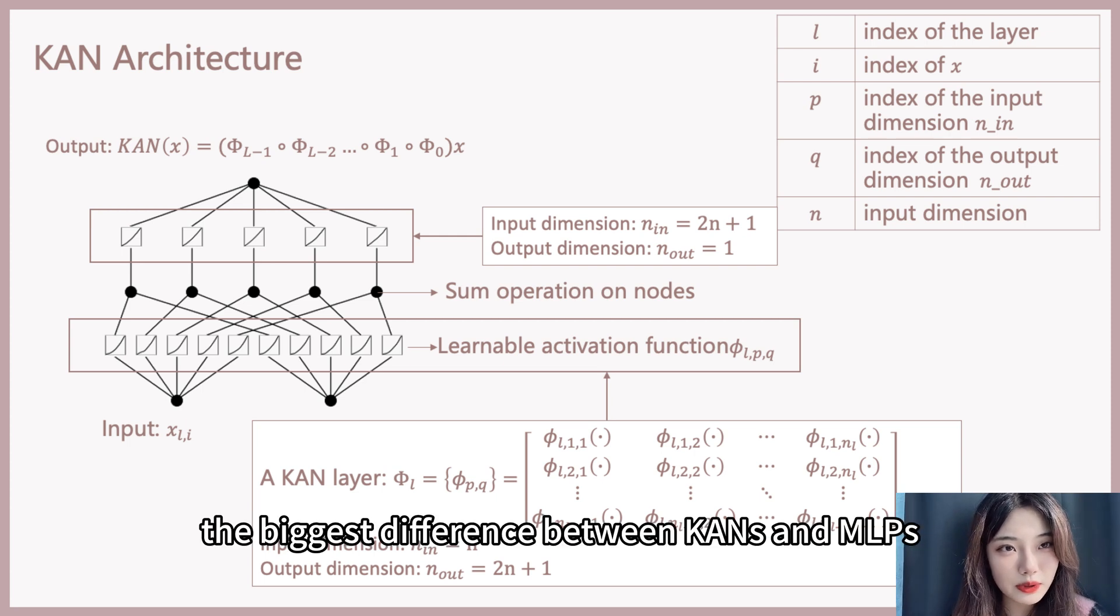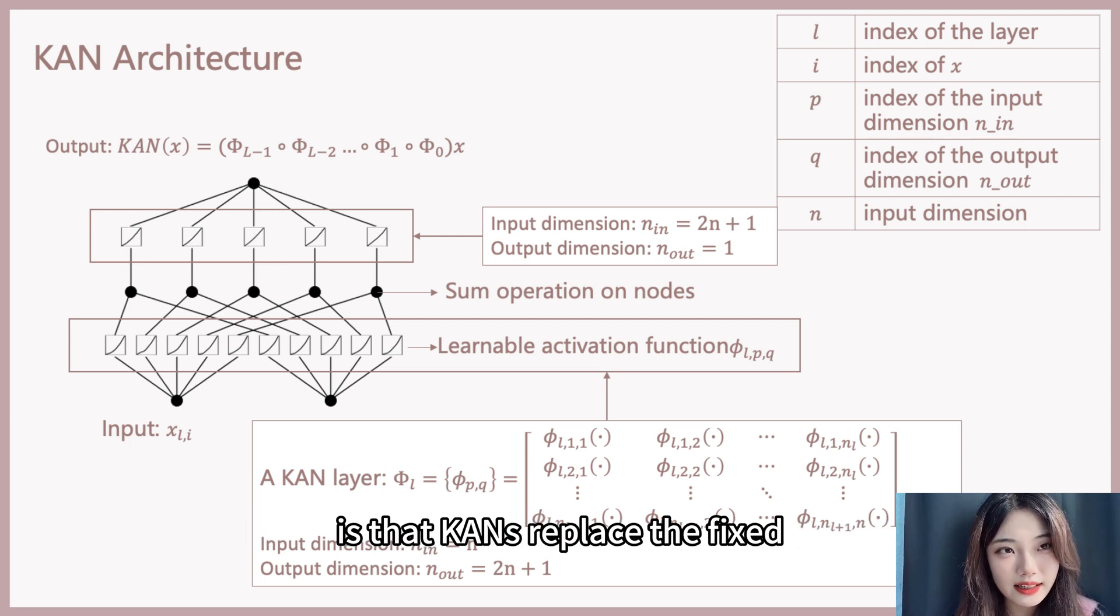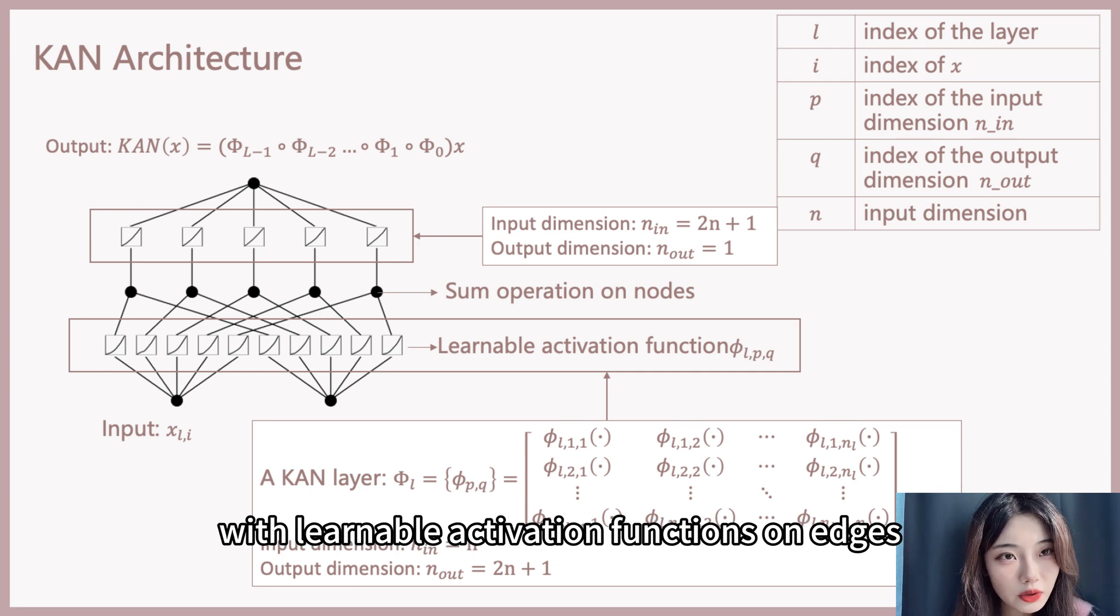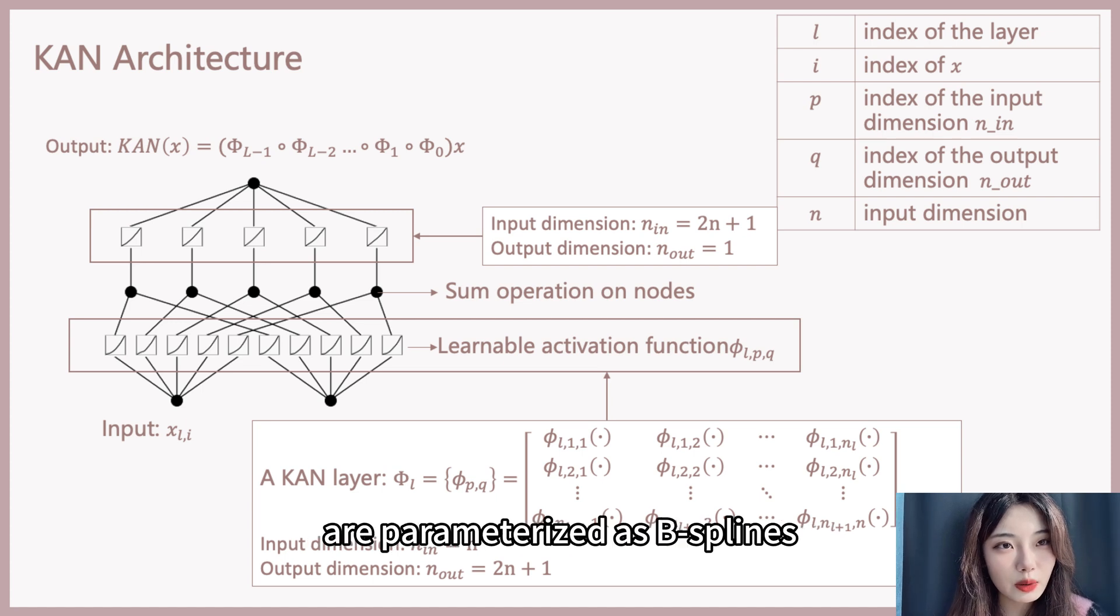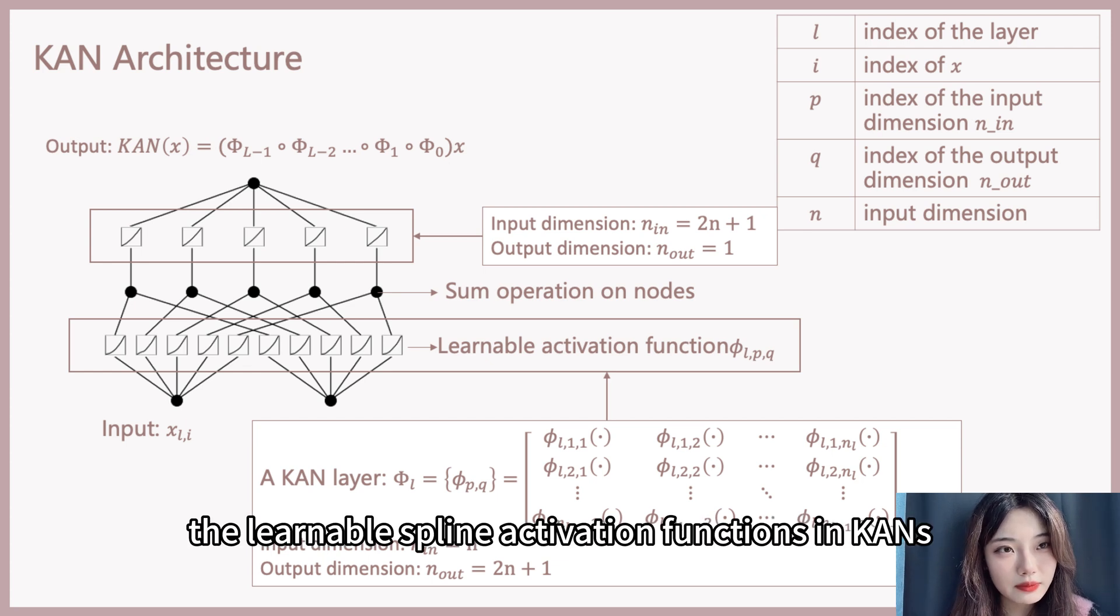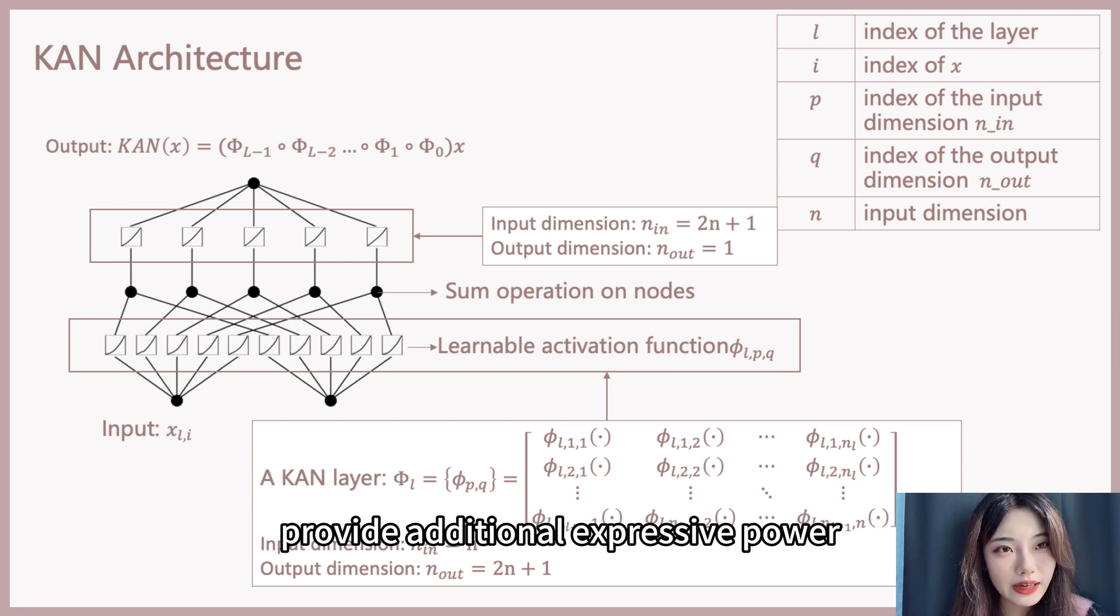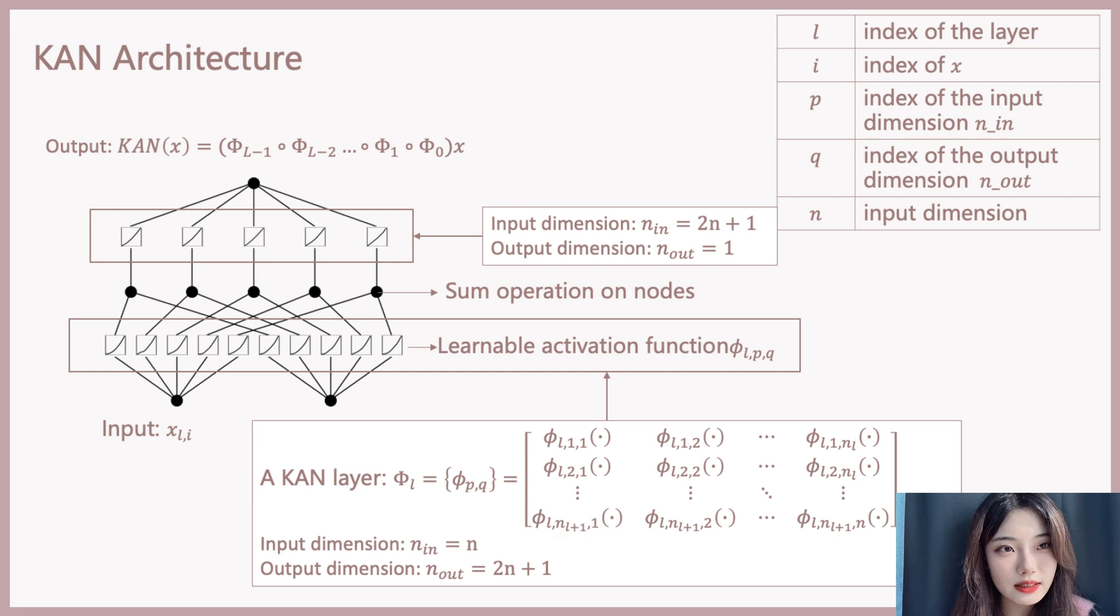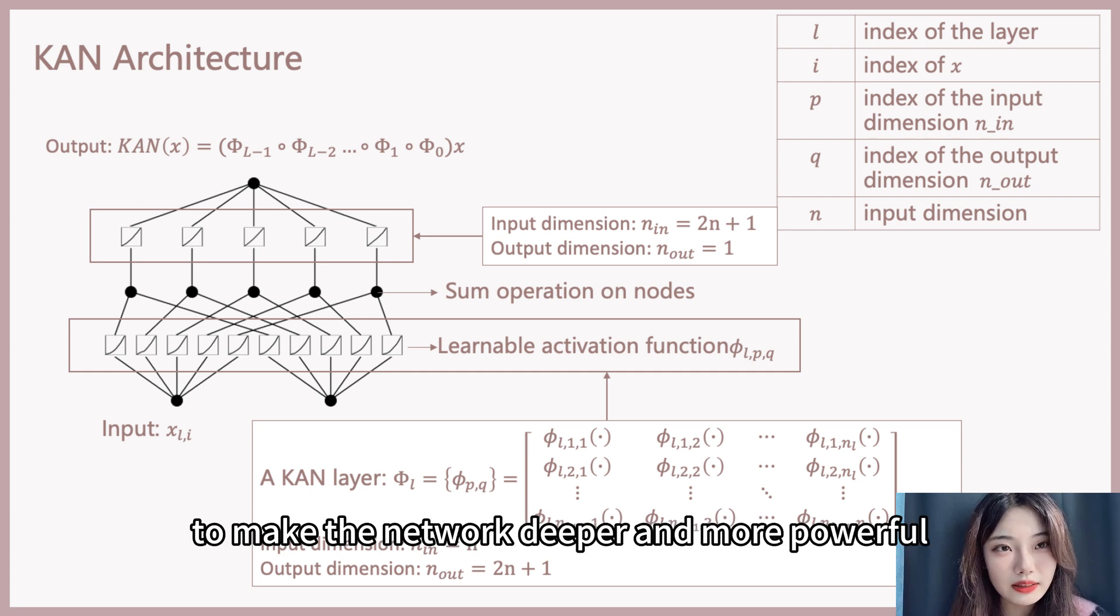The biggest difference between KAN and MLPs is that KAN replaces the fixed activation functions on nodes in MLPs with learnable activation functions on edges. These learnable activation functions are parameterized as B-splines, allowing them to represent complex 1D functions. The learnable spline activation functions in KAN provide additional expressive power compared to the fixed activation like ReLU in MLPs. Just like MLPs, we can simply stack more KAN layers to make the network deeper and more powerful.